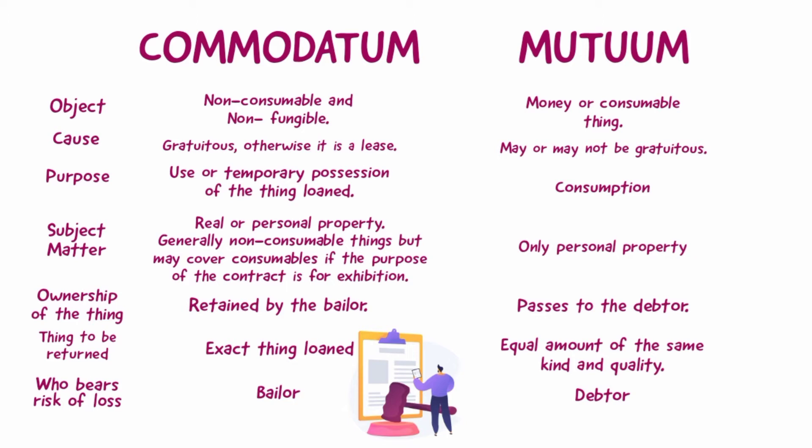Fourth, the subject matter of commodatum is real or personal property — generally non-consumable things, but may cover consumables if the purpose of the contract is for exhibition — while the subject matter of mutuum is only personal property. Fifth, the ownership of the thing in commodatum is retained by the bailor, while the ownership of the thing in mutuum passes to the debtor.